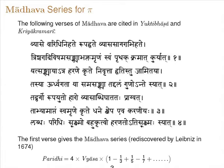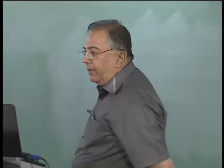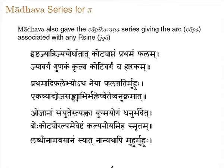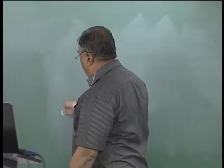The other verses of Madhava have to do with the end correction term, which we will come to later. Madhava also gave the relation between the arc and the chord, the arc and the jya and the kojya. This relation is again cited in Kriyakramakari and Yuktibhasa: 'Ishtajya Prijya Yorghatat Kotyaptam Prathamam Phalam.' The jya multiplied by Koty — jya is r sin, Koty is r cosine — so the ratio is the tangent of the arc.